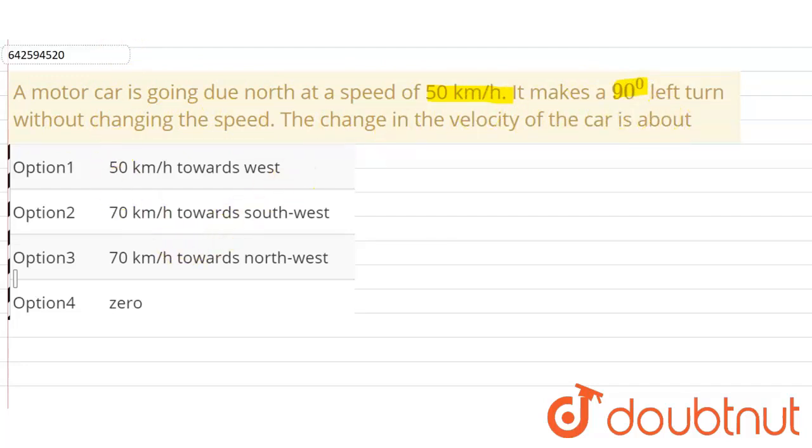Okay, so let us suppose this is our axis, correct, where this is the north, this is the east, south and west. So the car is moving in the north direction with a velocity of 50 kilometer per hour.